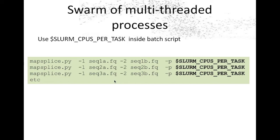Here's an example running a program called MapSplice. This is a Swarm command file with a series of lines — one per subjob — and each line has the -p flag, which for MapSplice determines the number of threads. That -p flag is set to $SLURM_CPUS_PER_TASK.